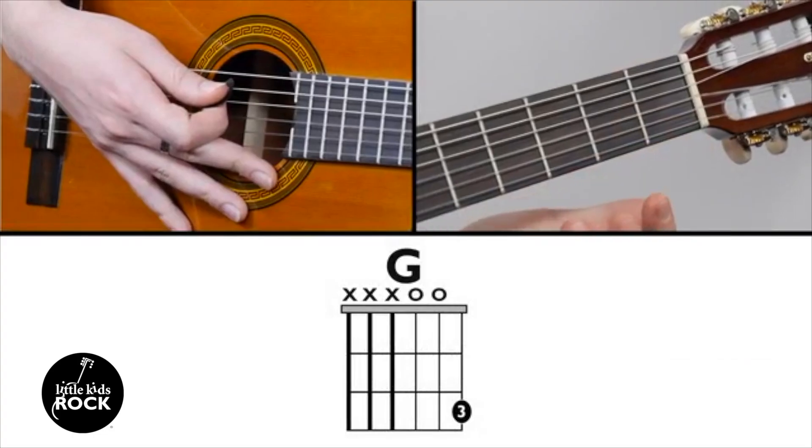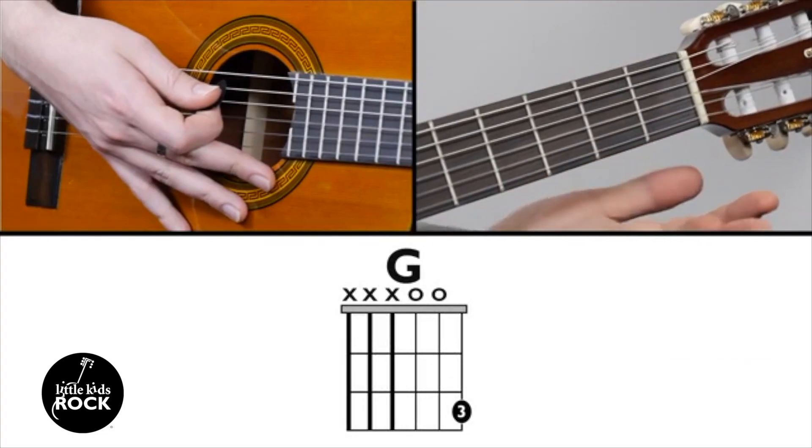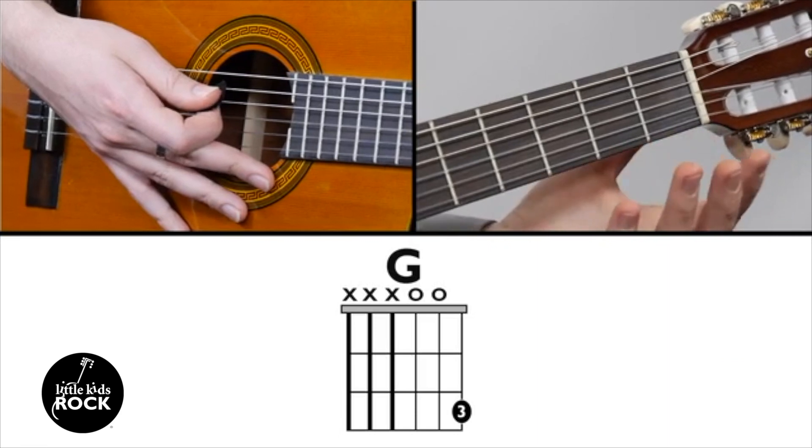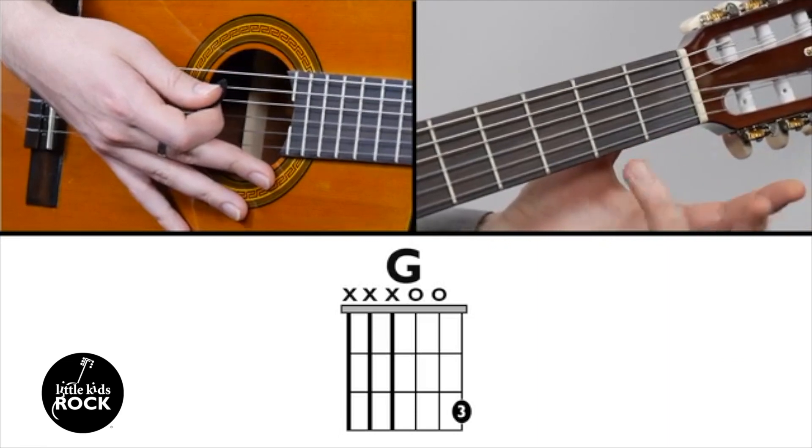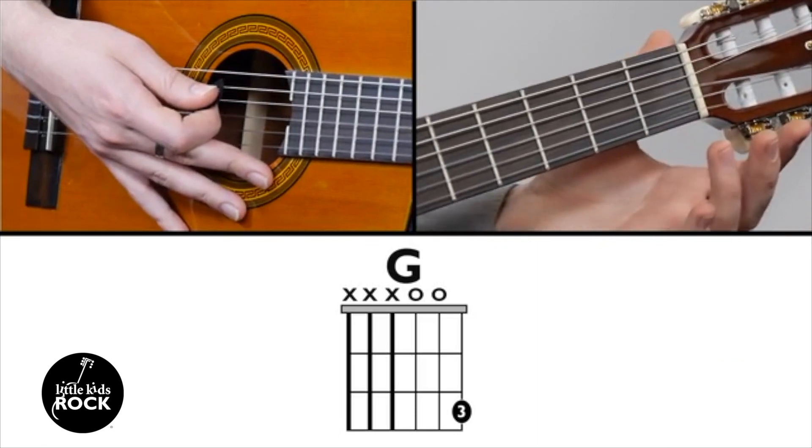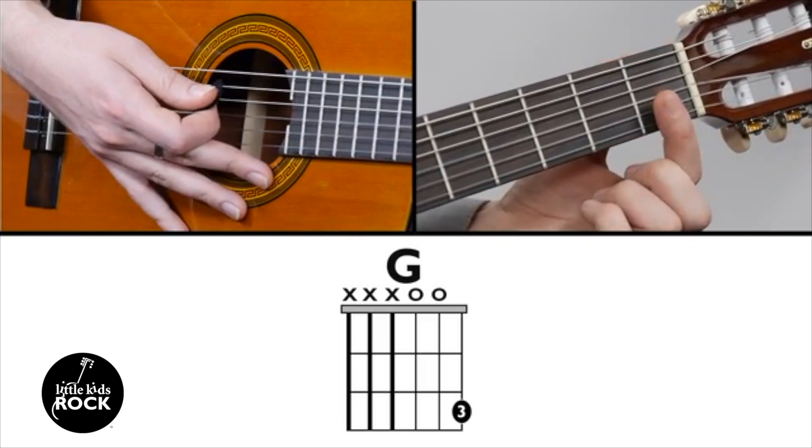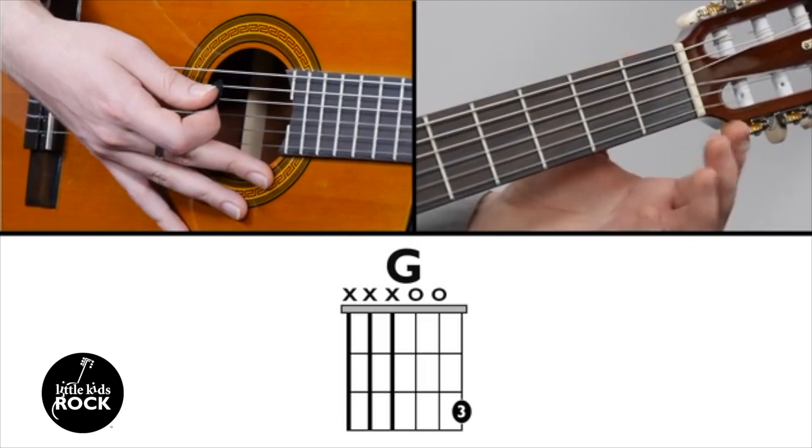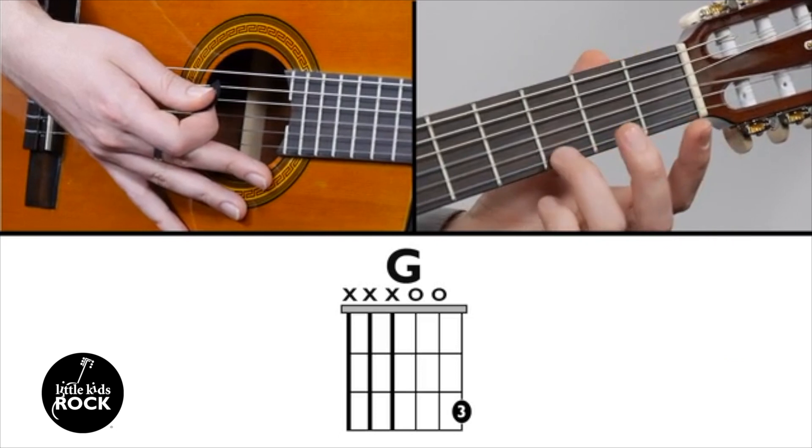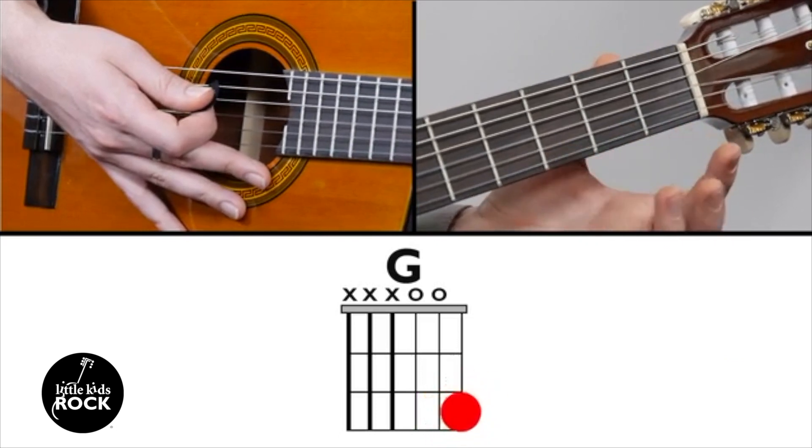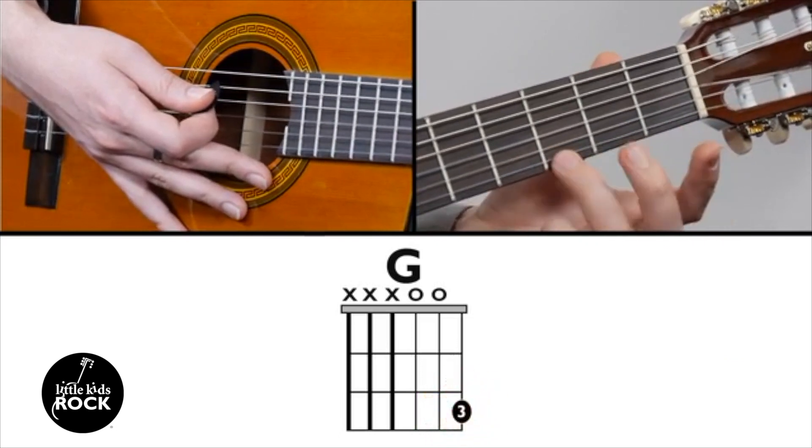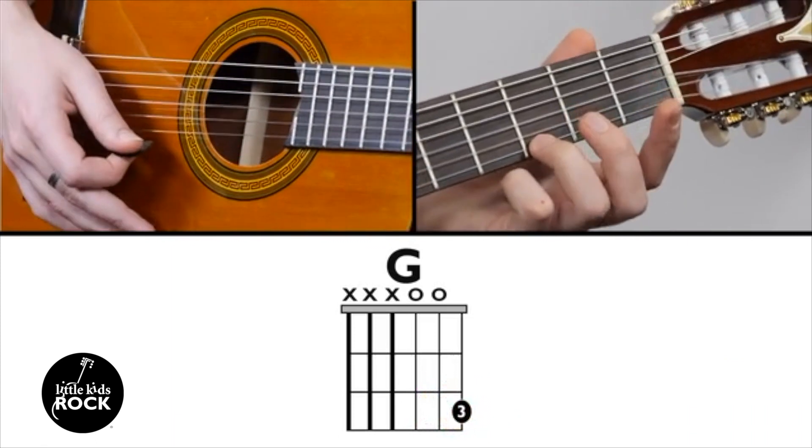Alright, the first thing we're going to do to play this easy G chord is take our third finger and put it on the third fret of the first string. Third finger, third fret, first string, cool.